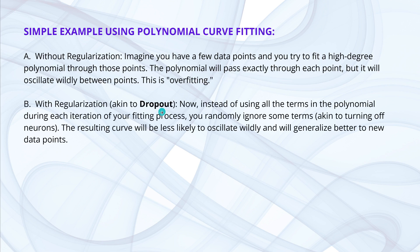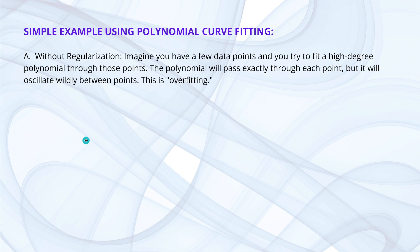If we apply classical dropout regularization to this network — instead of using all the terms in the polynomial during each iteration, we randomly ignore some terms, akin to turning off some neurons — the resulting curve will be less likely to oscillate wildly and will generalize better to new data points.